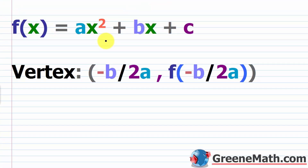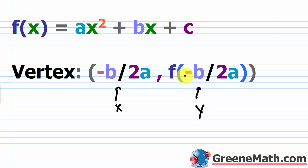Now let's talk about the vertex formula, which is what you're basically going to use most of the time — you won't complete the square every time. Given f(x) = ax² + bx + c, the x coordinate of the vertex is −b / 2a, and the y coordinate is f(−b / 2a). So find x first, then plug it back into the function to get y.